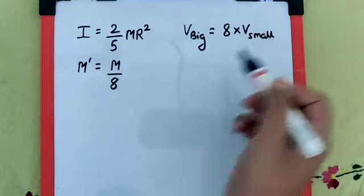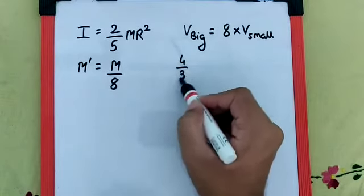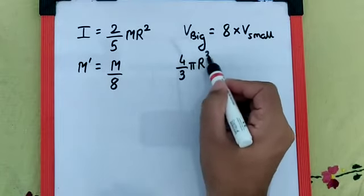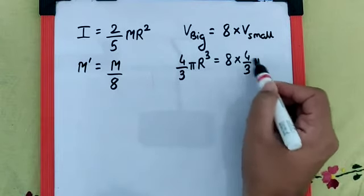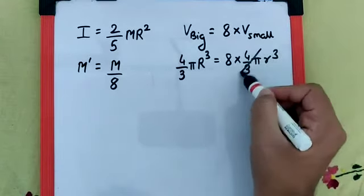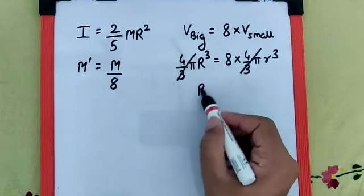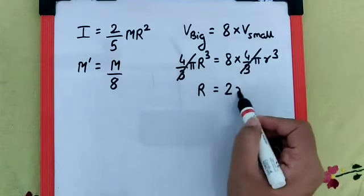Which means 4/3 π R³ = 8 × 4/3 π r³. Now 4/3 π gets cancelled. The moment we take the cube root, we get R = 2r.